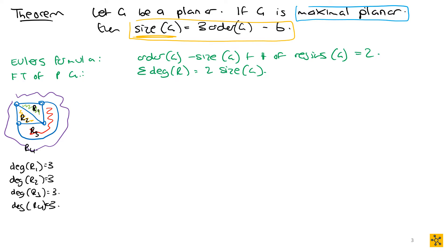Tracing R1 around its boundary and R2 around its boundary confirms each has degree three. One of the things you're going to notice for all maximal planar graphs is that all your regions are going to have degree three. We now have something that specifically fits the maximal planar definition and can go into the formulas we know — specifically the first theorem of planar graphs.